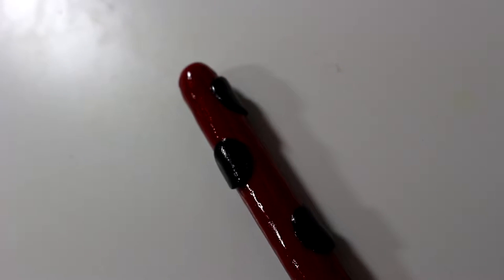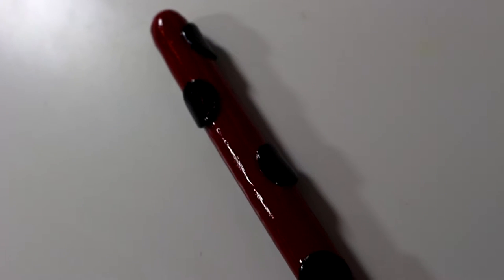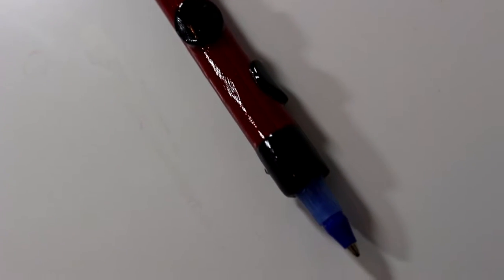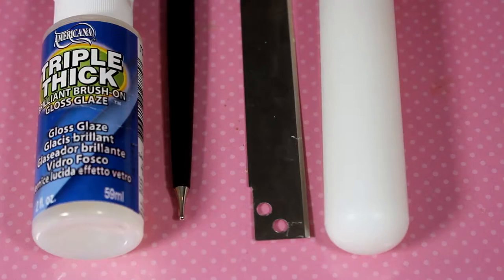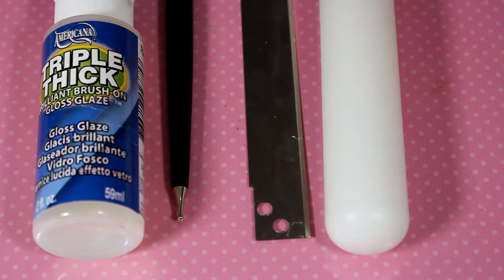So yeah, let's get straight into it. The things that you will need are red and black clay and a little bit of white, a rolling pin, a straight blade, a ball tool, and some glaze if you wish to make it nice and shiny.